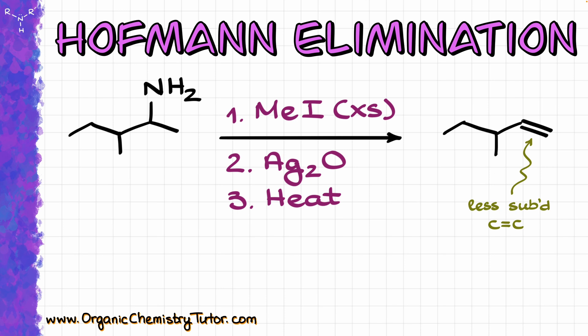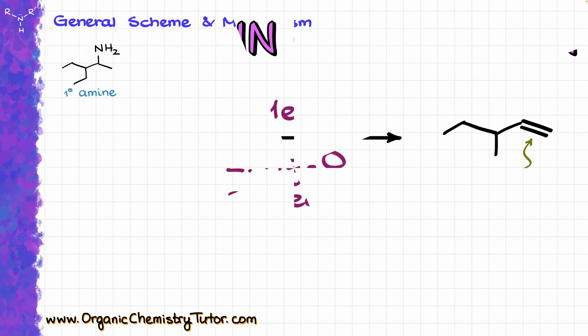And when it comes to the Hoffman elimination, the general idea starts with a primary amine. And unlike many other reactions we have seen in our course, this one is not just a reaction, but rather a sequence of steps giving us the final product at the end.